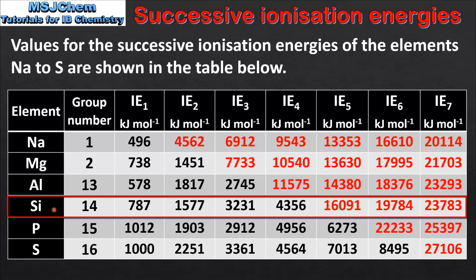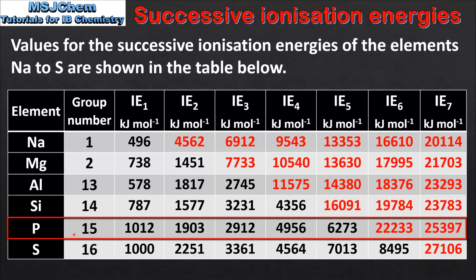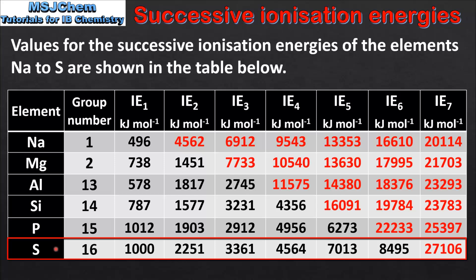Silicon, being a group 14 element, has 4 valence electrons, and we see the large increase after the 4th ionization. Phosphorus is a group 15 element with 5 valence electrons, and the large increase occurs after the 5th ionization. Sulfur is a group 16 element, and the large increase for sulfur occurs after the 6th ionization.